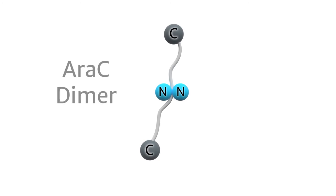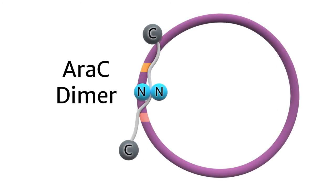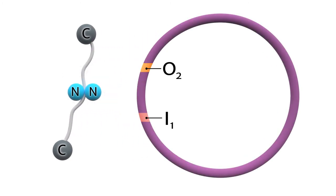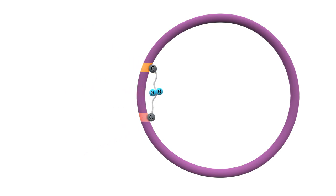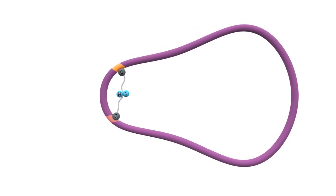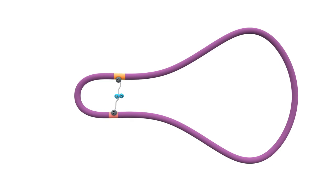The ara promoter in the arabinose operon is regulated by a dimer of AraC proteins that bind to the I1 and O2 elements upstream of the gene to be expressed. This causes a loop to form in DNA which prevents protein expression.